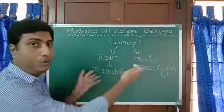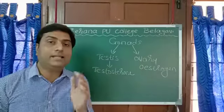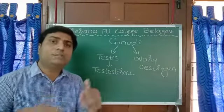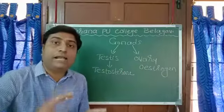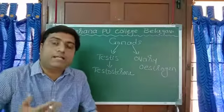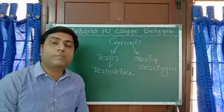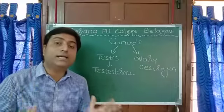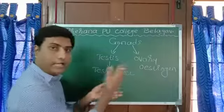Both of these hormones are responsible for bringing secondary sexual characters in human beings. Both males and females get matured and enter the adult stage. They start producing gametes. In females, the menstrual cycle starts; in males, the voice cracks and formation of mustache and beard takes place. All these are secondary sexual characters, and that is because of testosterone and estrogen.